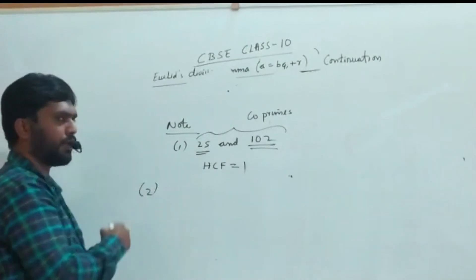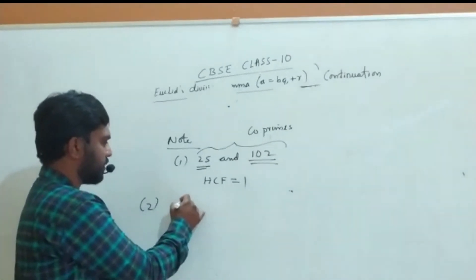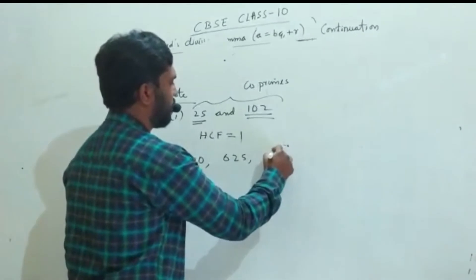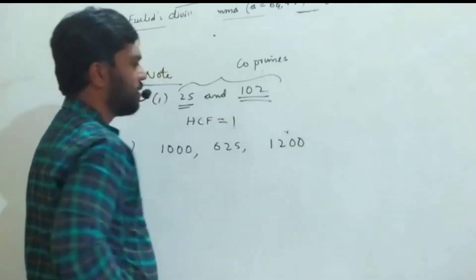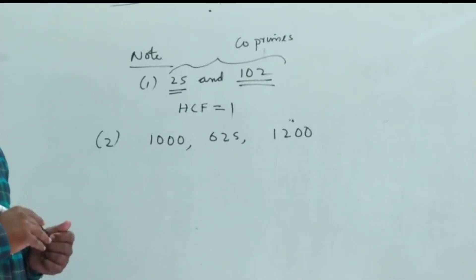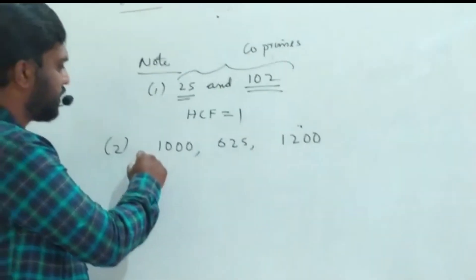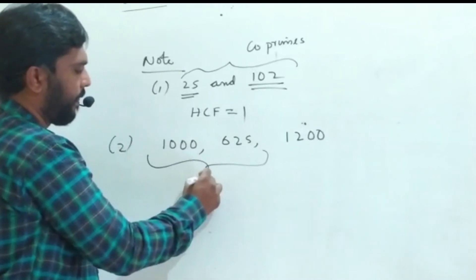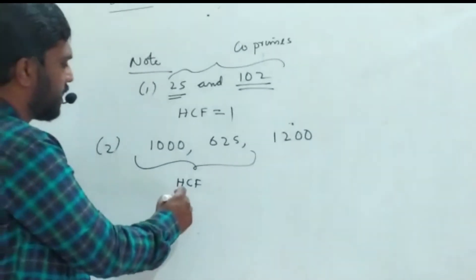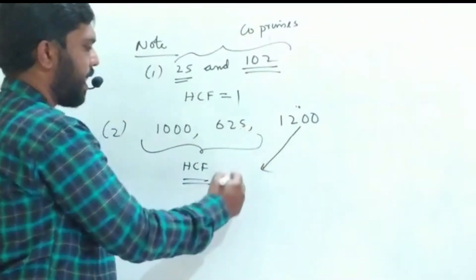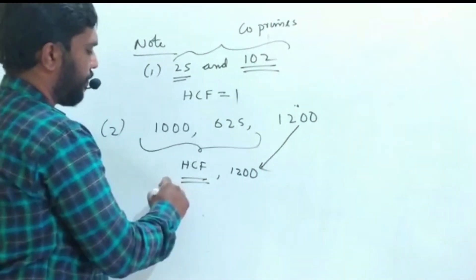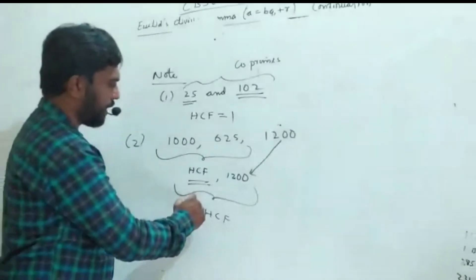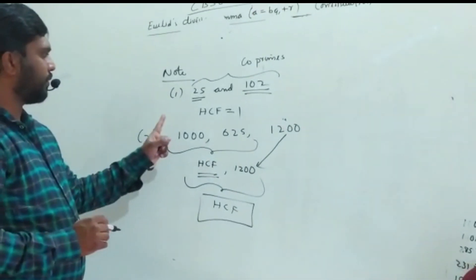Second note: if you have three numbers — for example 1000, 625, and 1200 — and you want to find the HCF of all three, first use the same method to find the HCF of two of the numbers. Then take that HCF and the third number, and find the HCF between those two. The final HCF you get will be the HCF of all three numbers.